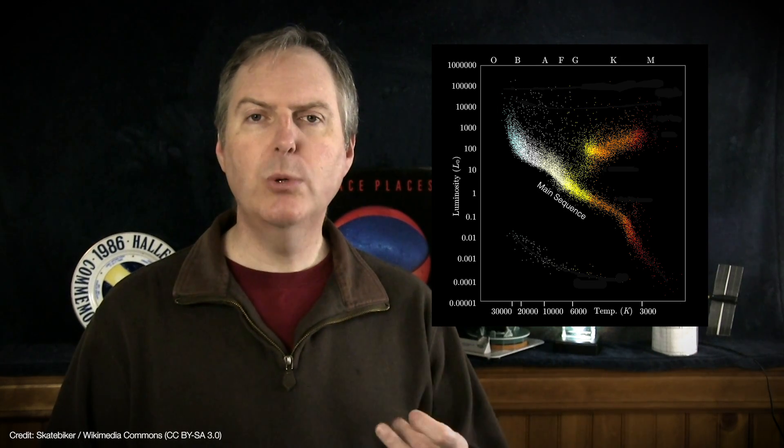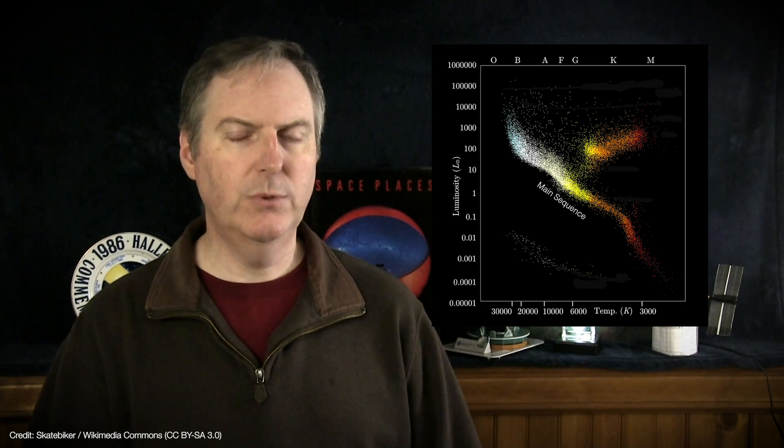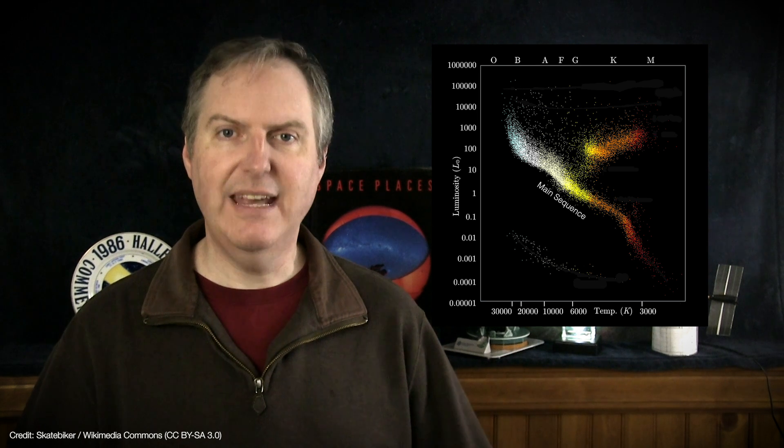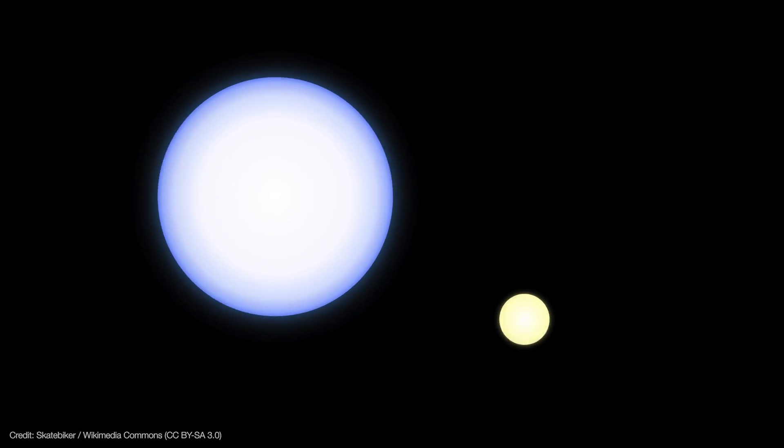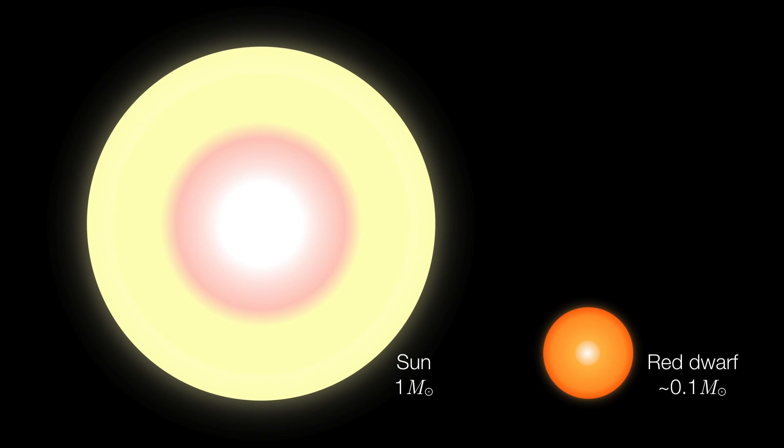Like any main sequence star, red dwarfs shine by fusing hydrogen into helium in their cores and releasing energy in the process. But the rate at which stars burn their hydrogen fuel depends on their mass and how much pressure they can exert on their cores. High mass stars squeeze their cores harder, so they fuse their hydrogen fuel much more quickly. But low mass stars are lighter, so their cores are under less pressure and therefore burn their hydrogen fuel much longer. But red dwarfs have the smallest cores, so it might seem that they should run out of their hydrogen fuel after a relatively short amount of time. But red dwarfs, particularly those that are under 35% the sun's mass, have another tremendous advantage.